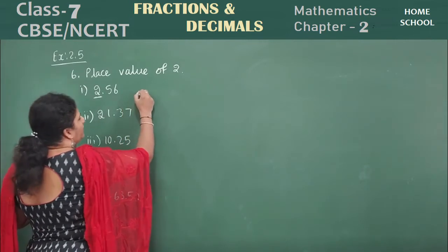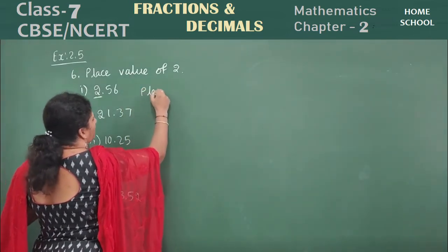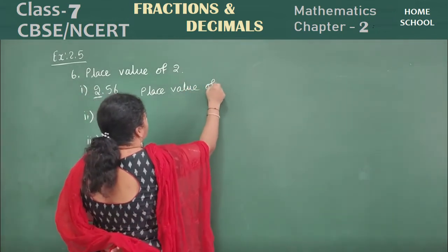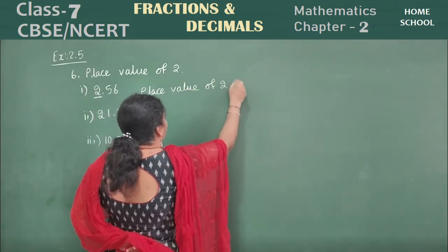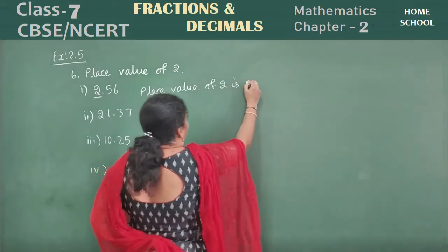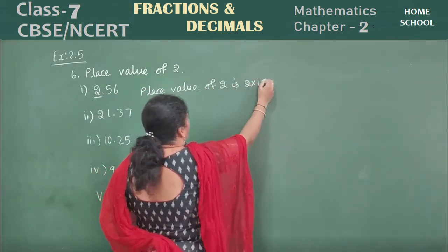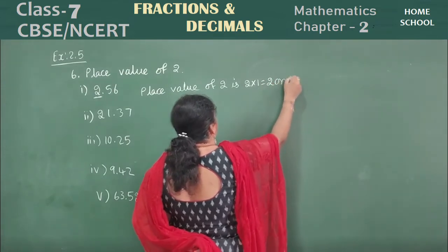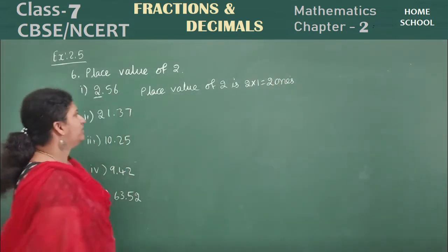So you may write here: place value of 2 is, 2 is in which place? Ones place. That is 2 into 1. That will be 2 ones place, this is. Right?